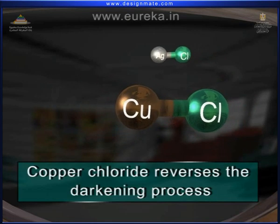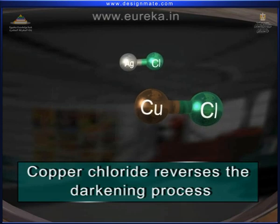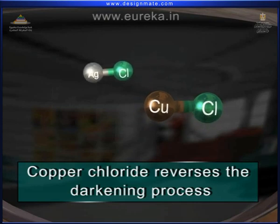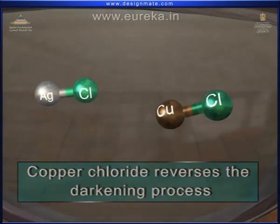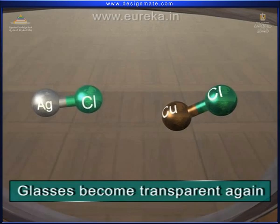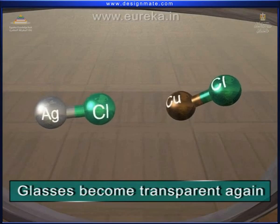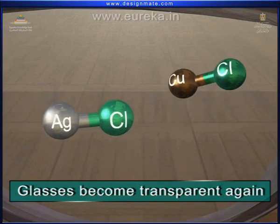Thus, copper chloride reverses the darkening process, and the photochromic glasses become transparent again.